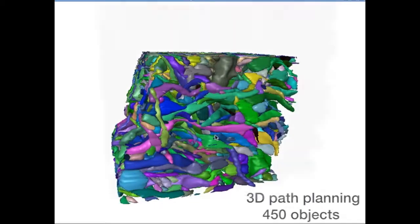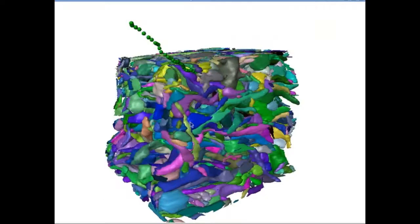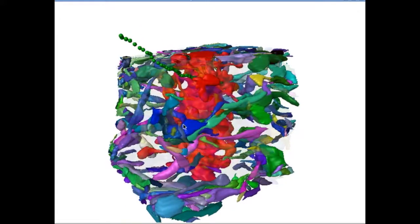Path planning also works in three dimensions. Our implementation uses Dijkstra's algorithm on the generalized Voronoi diagram mesh to find the min path through packed objects. Here, the path is represented by the chain of green spheres.